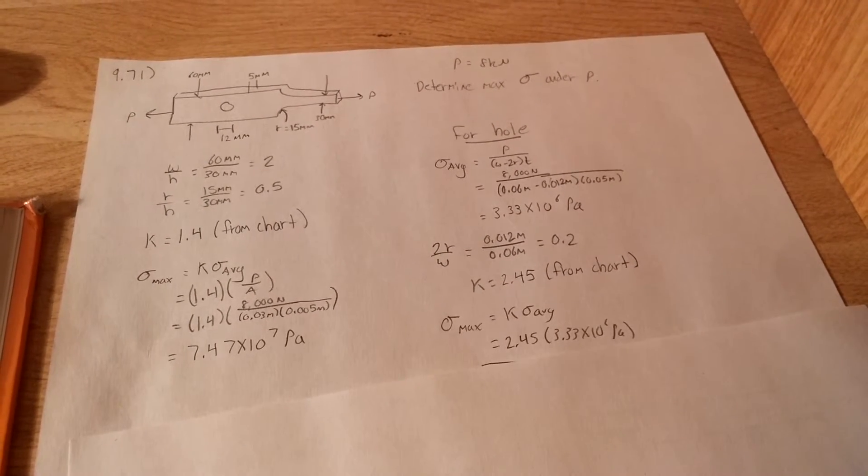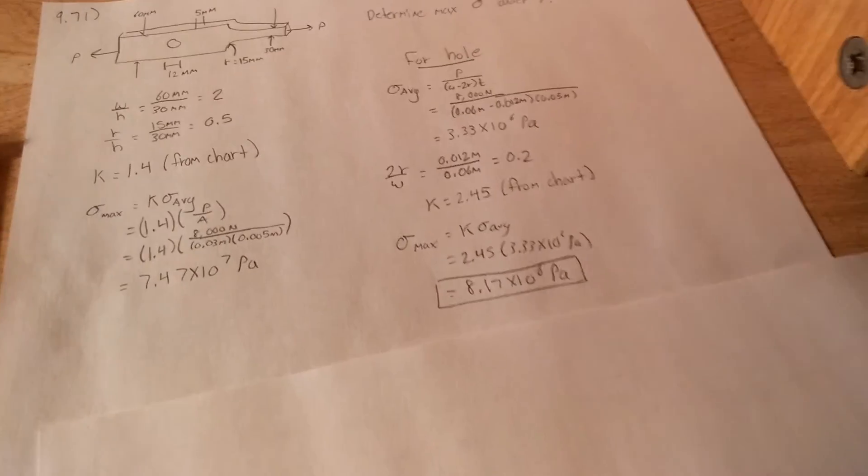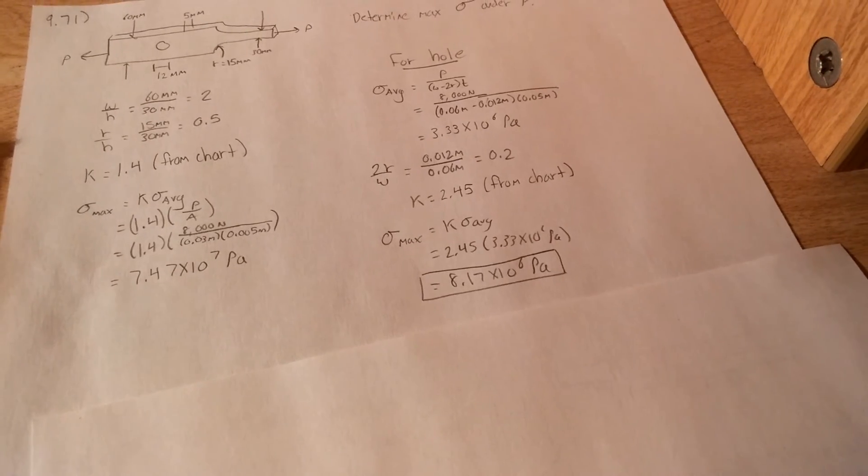So same equation. Max equals K average. Multiply it out. You end up getting 8.17 times 10 to the 6th pascals.